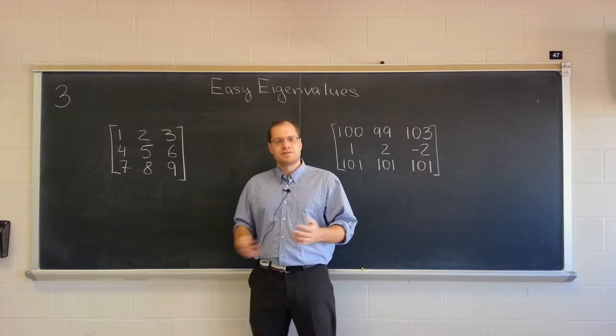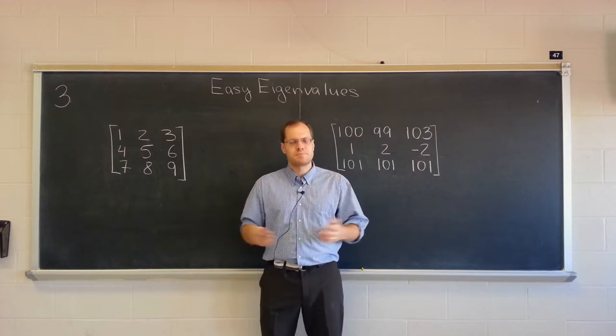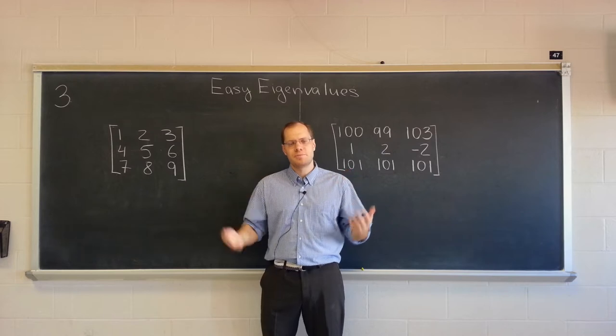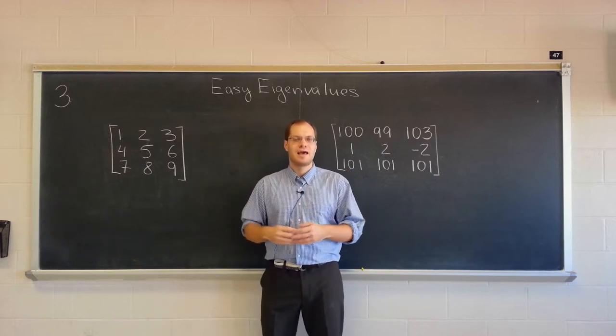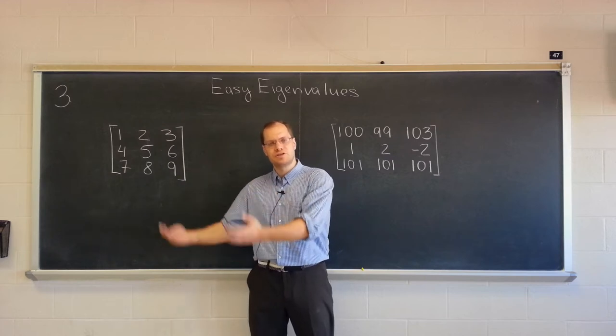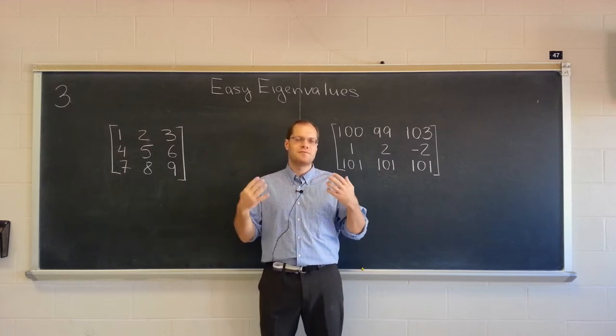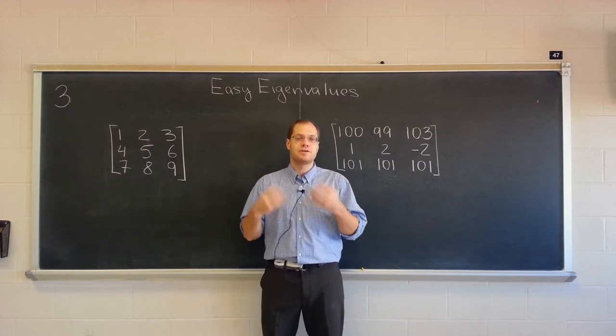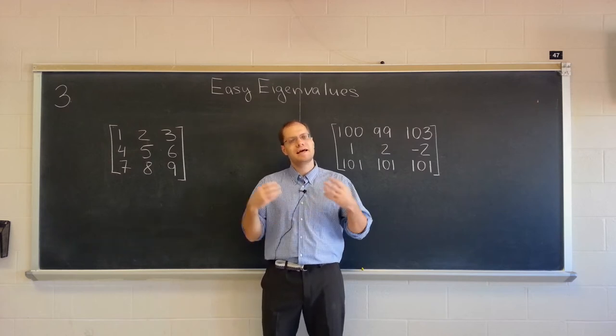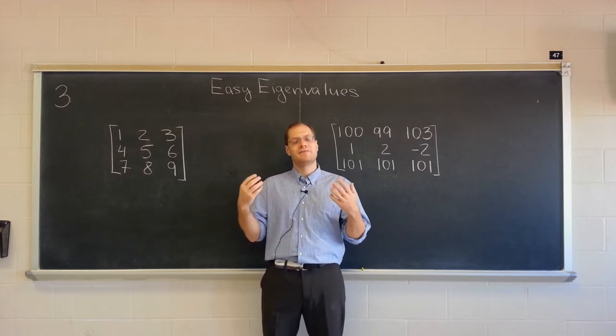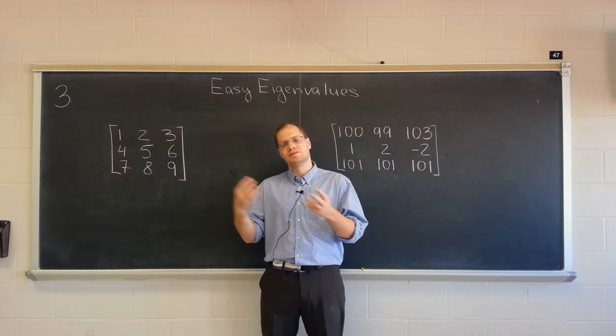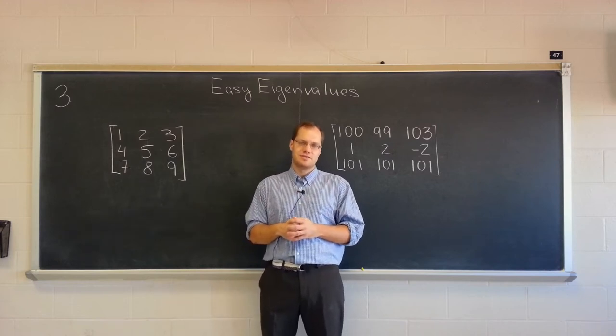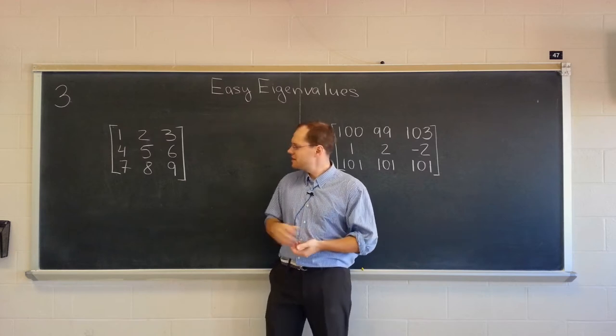So you might be working on some math problem, or some physics problem, or some engineering problem, or some geometry problem, and you end up with a matrix that describes it. And you know from the physics or from the engineering of it that the columns of the matrix are linearly dependent. You know that the matrix is singular. That actually tells you one of the eigenvalues. And that eigenvalue is zero, and anything from the null space corresponds to that zero eigenvalue. Let's see why that is so.